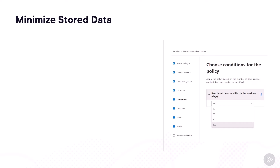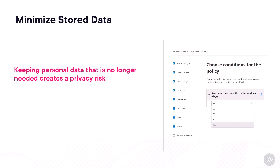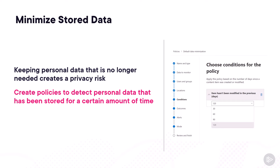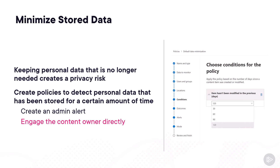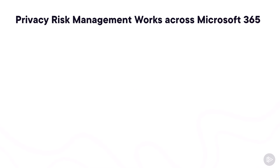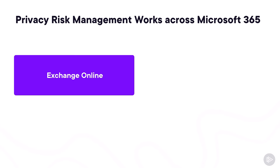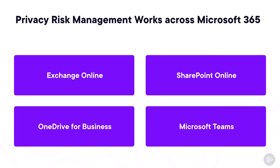Finally, Priva helps organizations minimize stored data. From a legal point of view, keeping personal data for customers that is no longer needed can create a privacy risk. Privacy Risk Management allows you to create policies that detect personal data stored for a certain amount of time or that hasn't been modified in a certain amount of time. It can either create an alert for privacy admins or engage the content owner directly so they can check if it's still needed. Priva Privacy Risk Management works across Microsoft 365, detecting data in Exchange Online, SharePoint Online, OneDrive for Business, and Microsoft Teams.